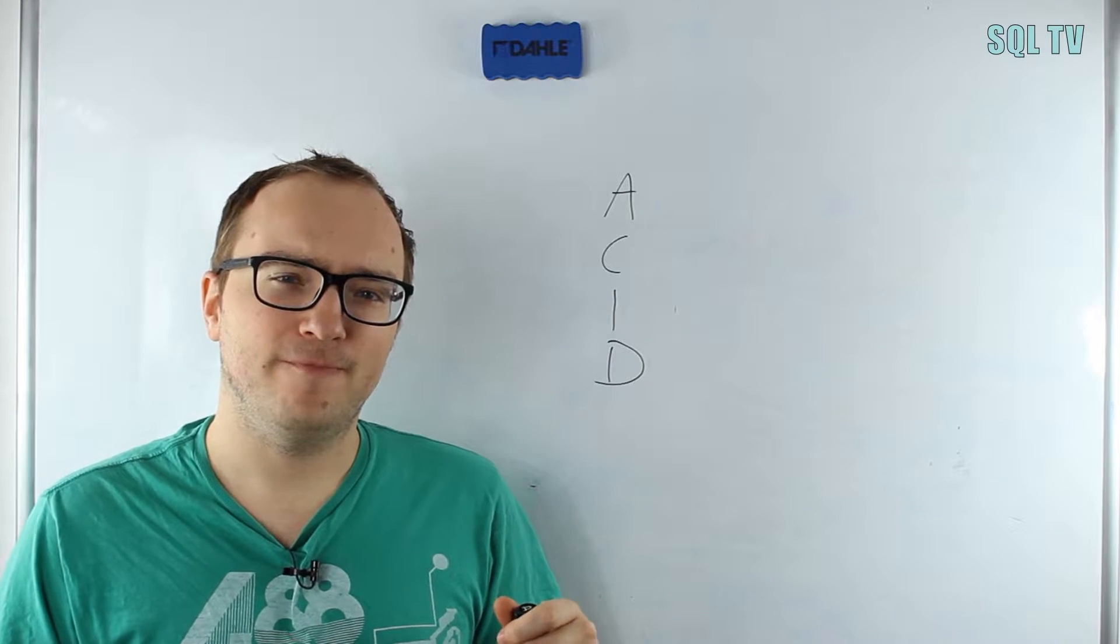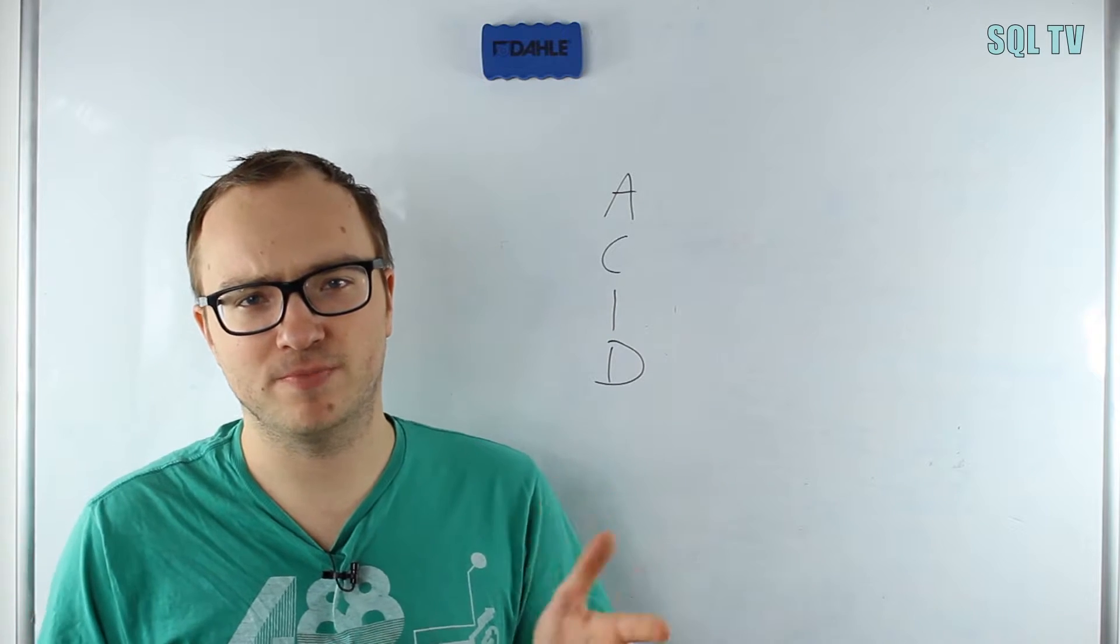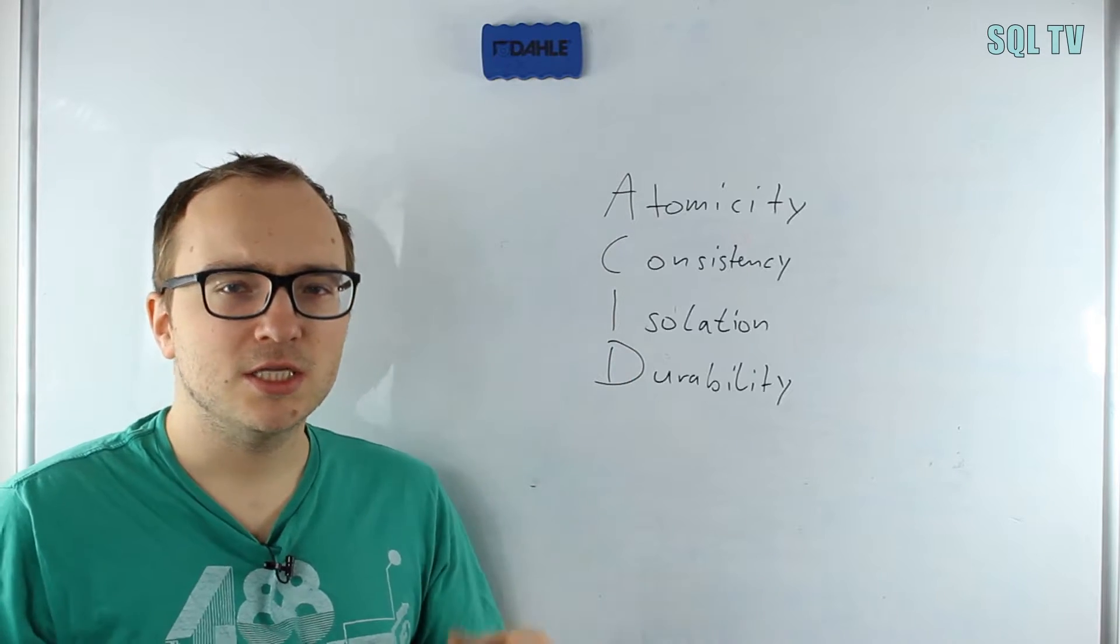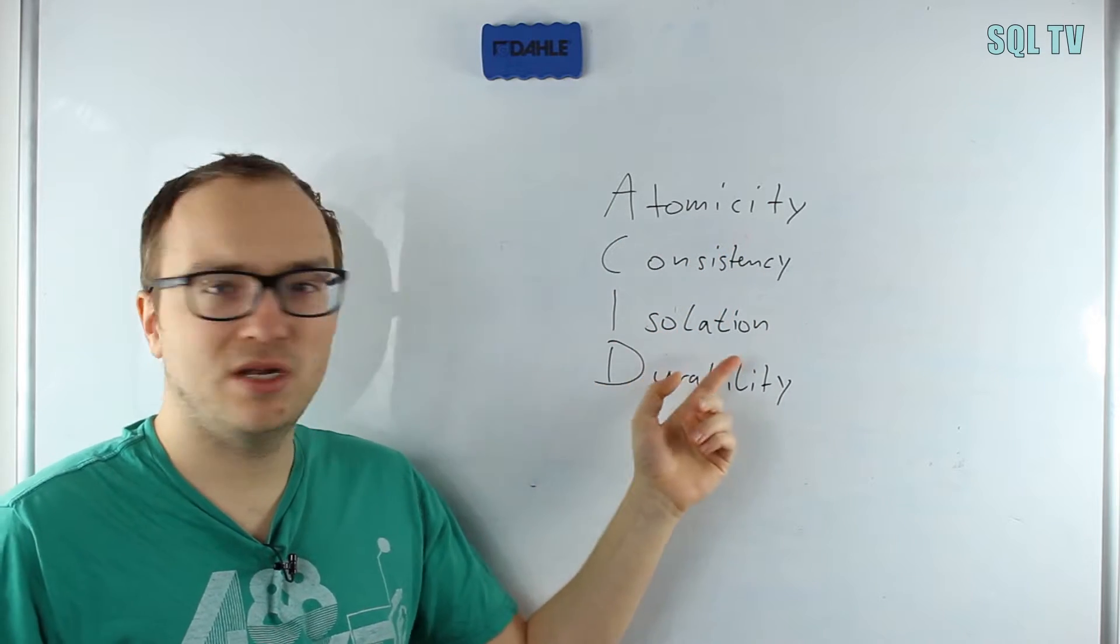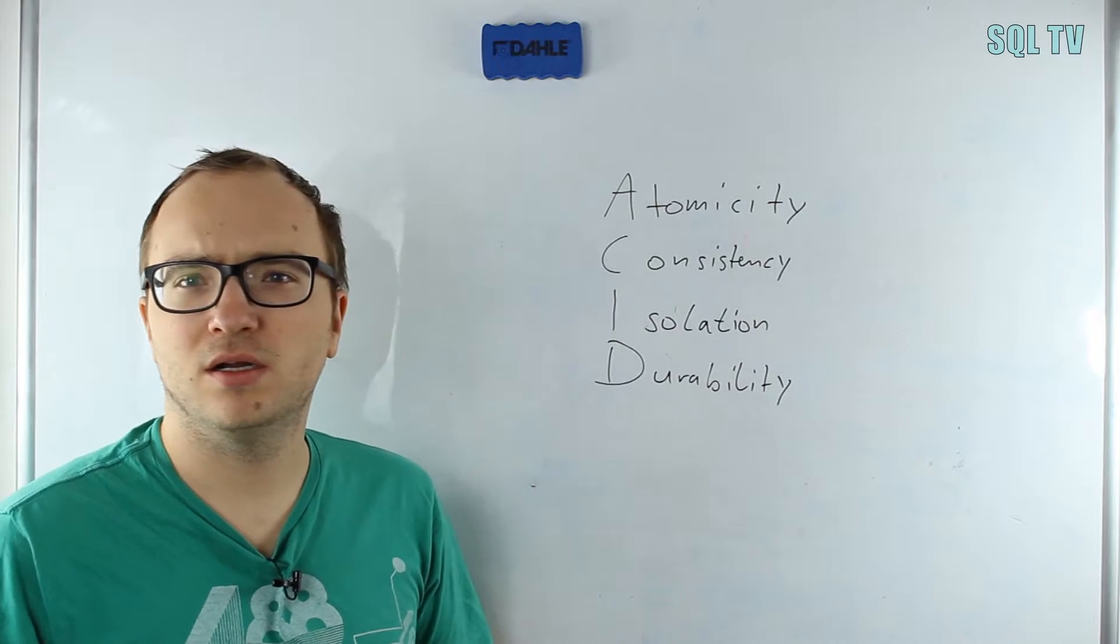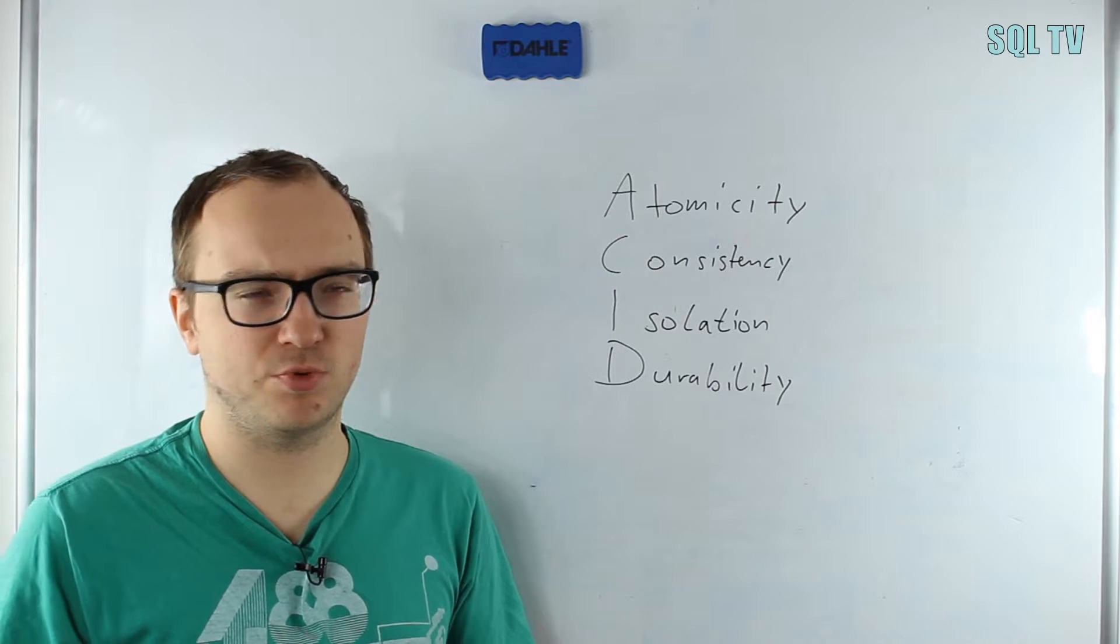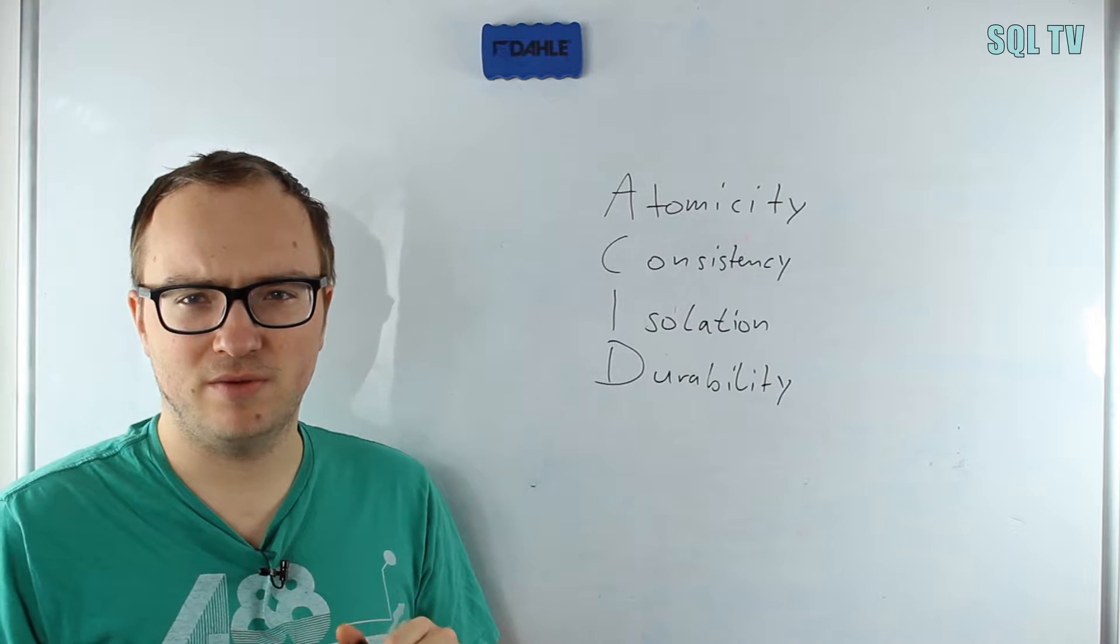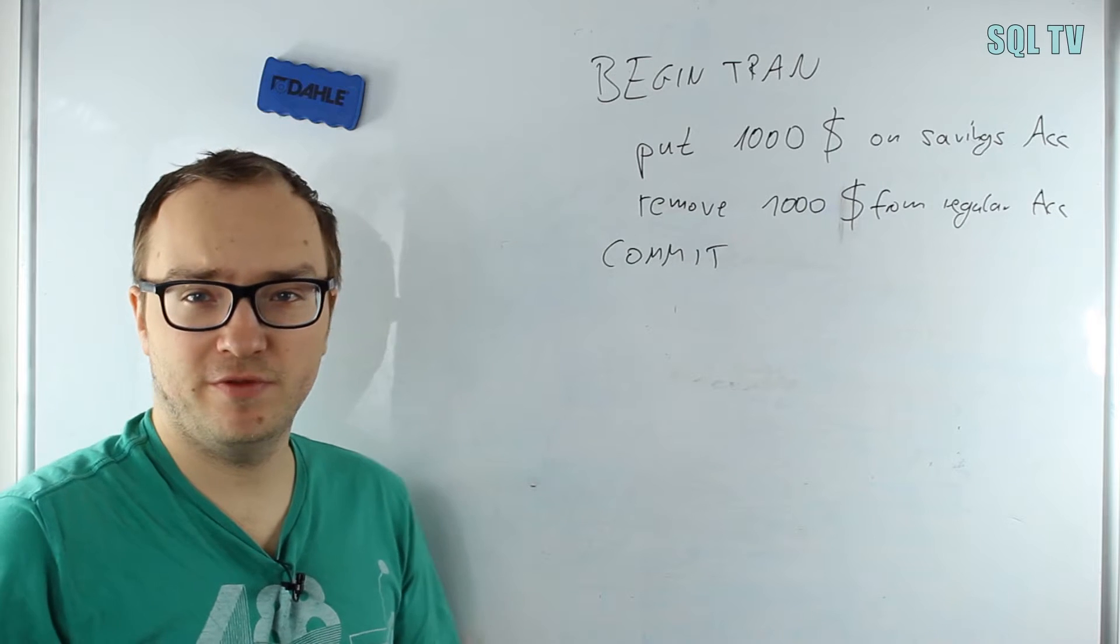Every transaction fulfills four properties called the ACID properties. ACID stands for Atomicity, Consistency, Isolation, and Durability. All of those four properties are important and every transaction fulfills those properties. Let's look one by one at each of those properties.